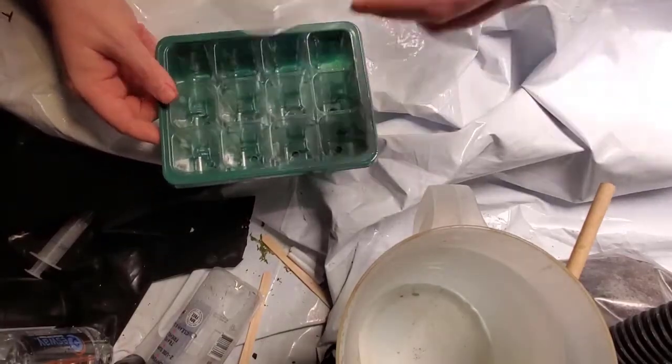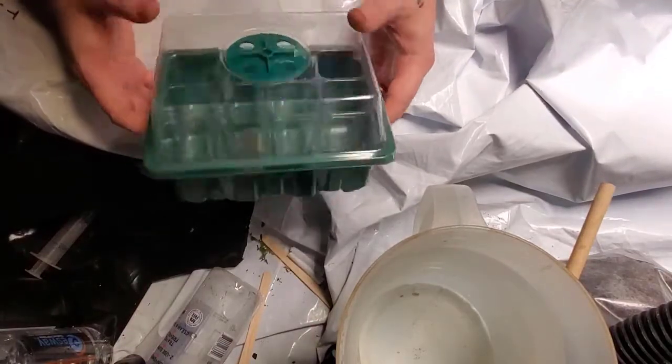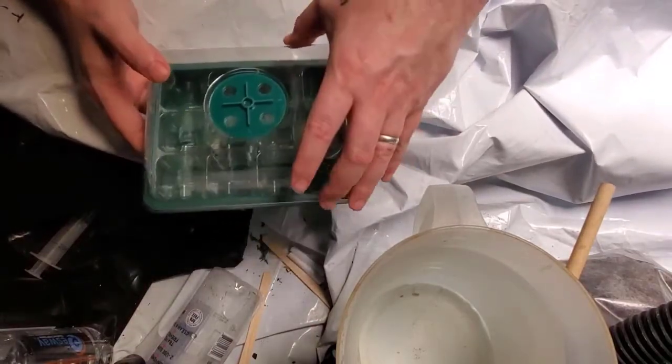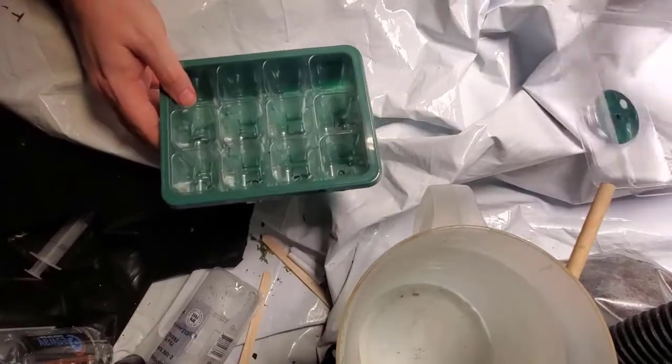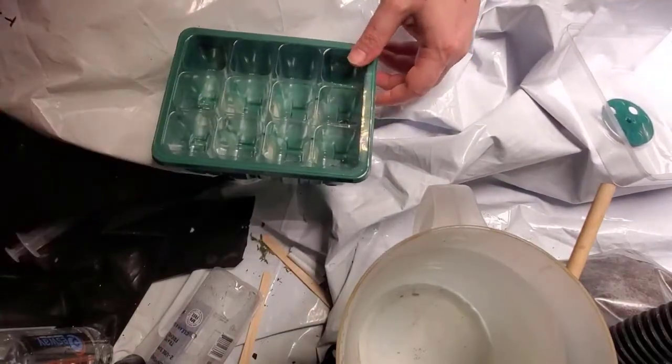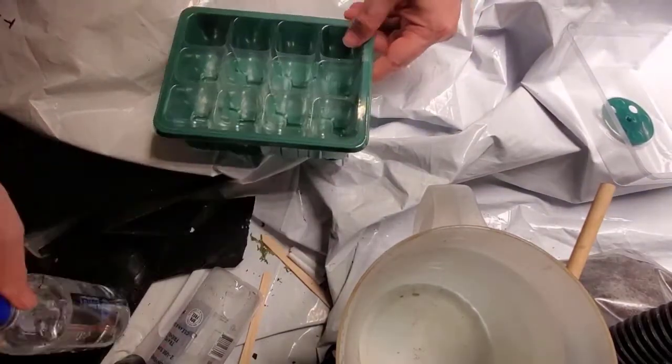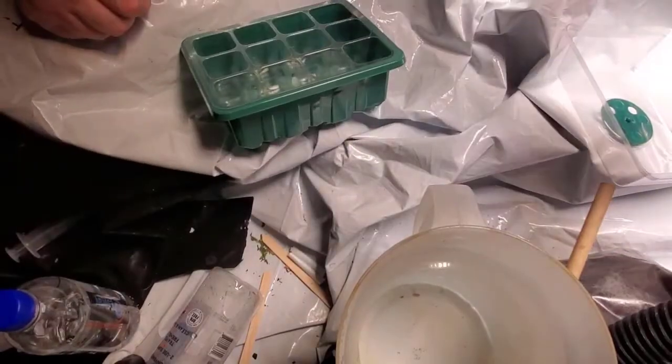You'll see a little humidity dome like this. They come at two bucks a piece if you buy them on Amazon by the tin. Need some water, we need our rapid rooters.